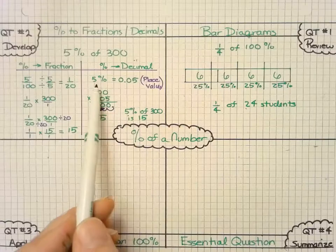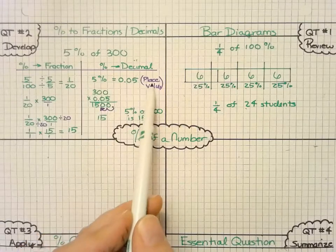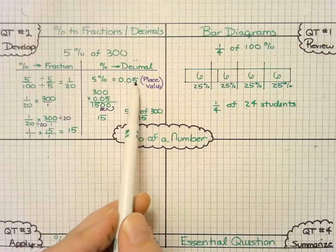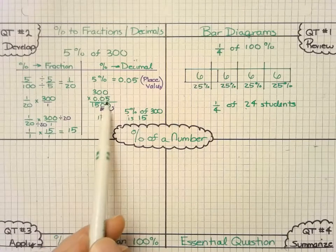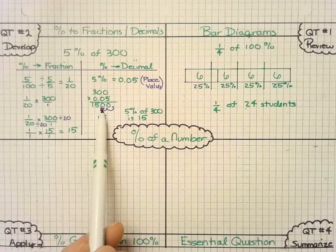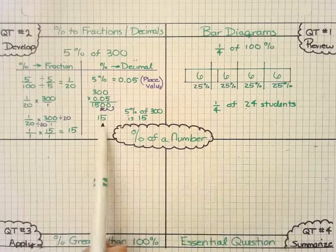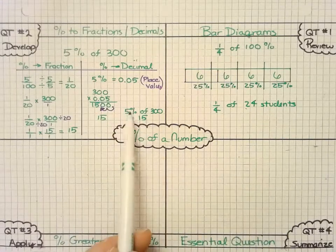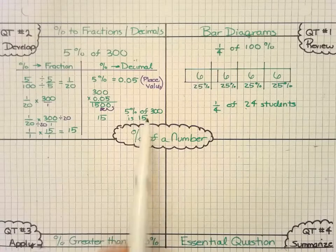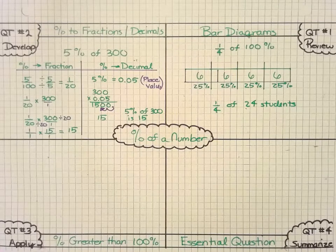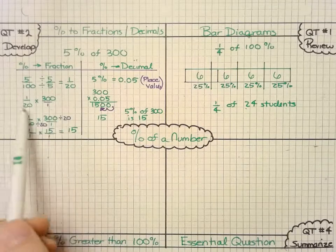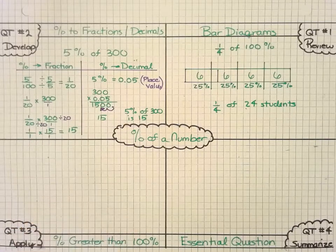If I were to convert that to a decimal, I can take 5% using my place value and put that in the hundredths place, and then multiply. Notice how I had to move the decimal place over 2, because the decimal has two place values there, and I also got 15. And so 5% of 300 is 15. The key here is to multiply by that total in our second step.